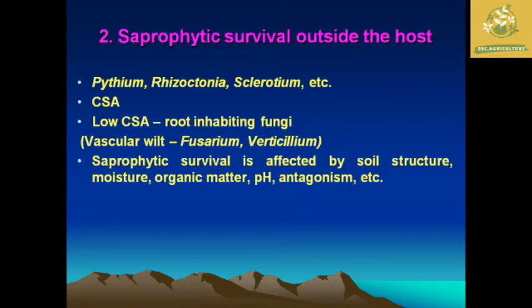The second category is saprophytic survival outside the host through spore formations. Examples include Pythium, Rhizoctonia, Sclerotium, and other root-inhabiting fungi. They are affected by soil structure, moisture, organic matter, and pH level in the soil. By maintaining soil health we can eradicate them from field conditions, as they rely on alternative spore formations and other techniques to persist in the open environment.